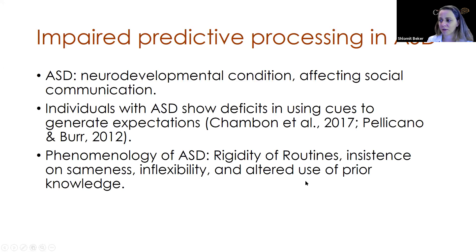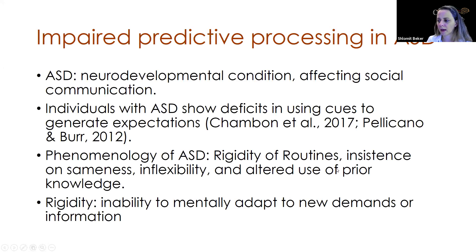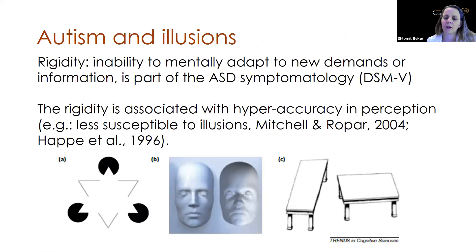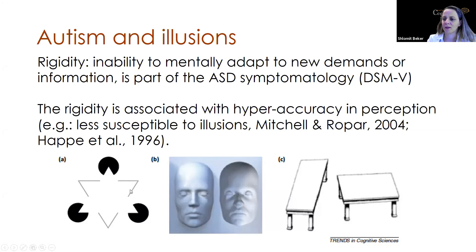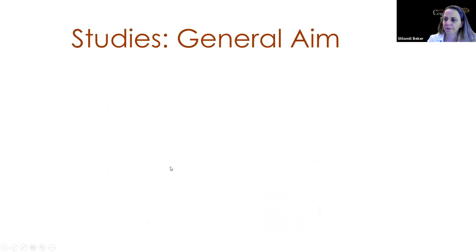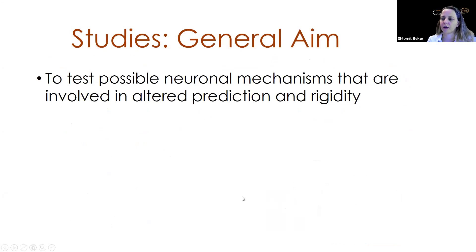The phenomenology of ASD includes rigidity of routines, insistence on sameness, inflexibility, and altered use of prior knowledge. Rigidity is the inability to mentally adapt to new demands or information. A good example comes from visual illusions — for instance, the Kanizsa triangle, which is perceived even though it's not explicitly outlined. People with autism will not perceive this, or will be less susceptible to such illusions. The general aim of the following studies is to test possible neuronal mechanisms involved in altering prediction and rigidity.